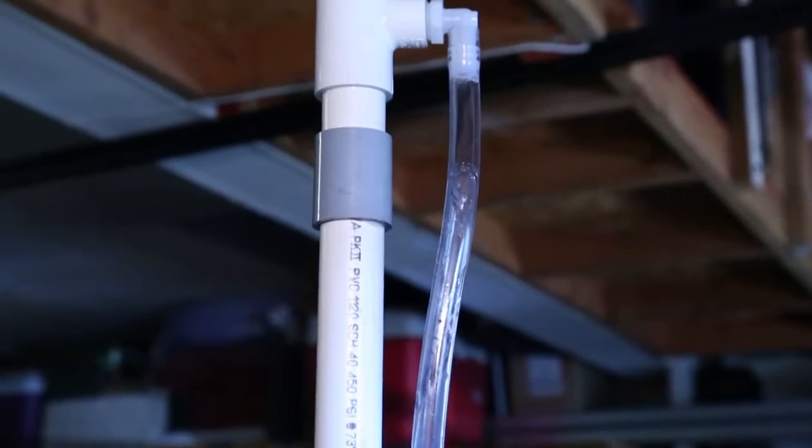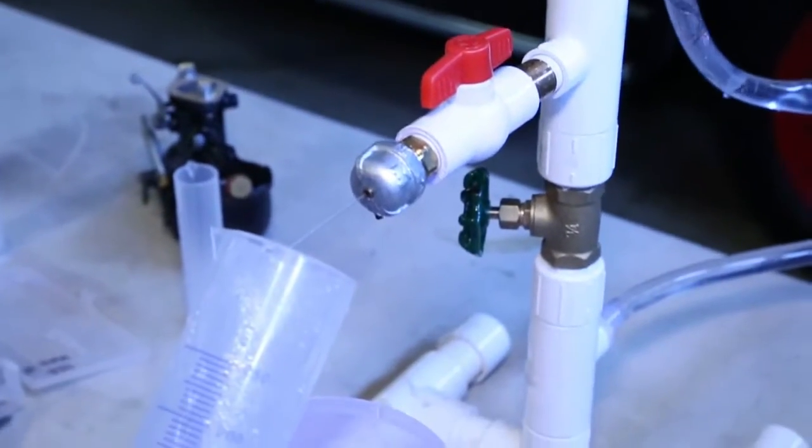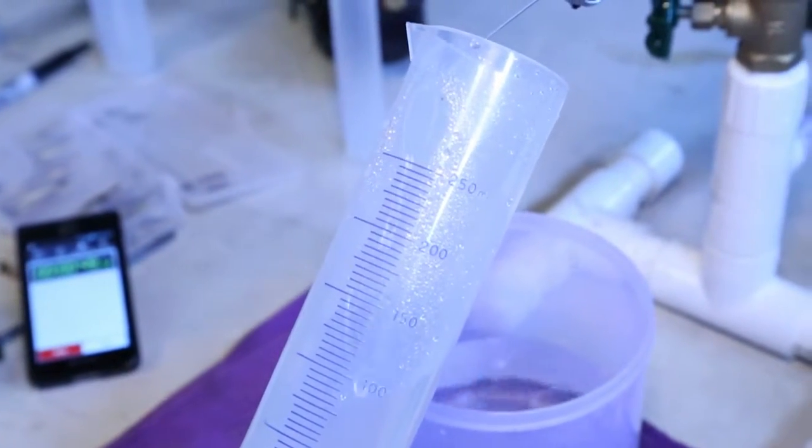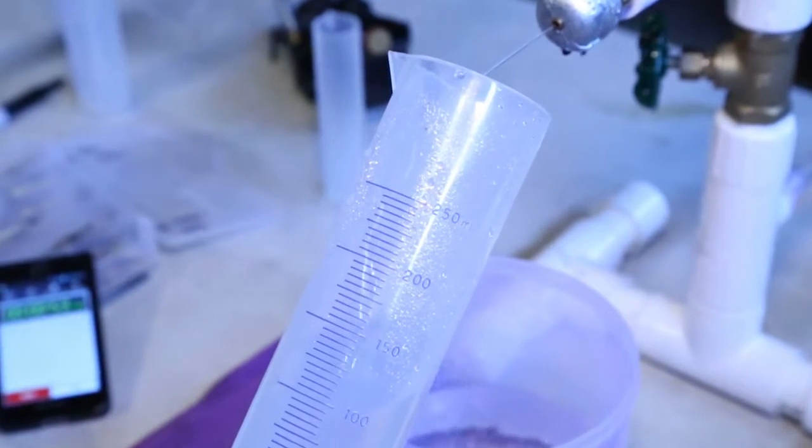The little PVC rig I made is just to establish that 36 inch high column of water and keep it constant. And then when I'm taking the measurement, this will give me an even calibrated flow. Every jet will be tested with the same amount of pressure behind it.